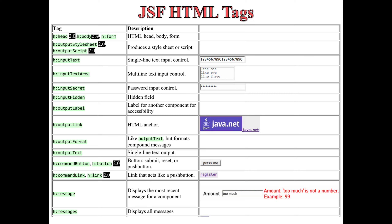Output label is associated with another component. Output link is an underlined link. Output format is a more sophisticated version for formatting text. Output text is paragraph-style output. Then come command links and command buttons. The basic difference is that command button and command link generate POST methods as part of the HTTP request, while H:button and H:link generate GET requests — important if you're not updating data on the server side but simply requesting information.